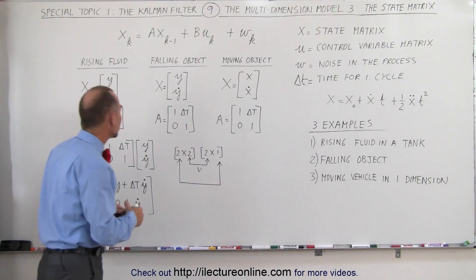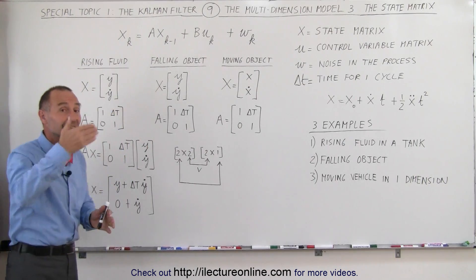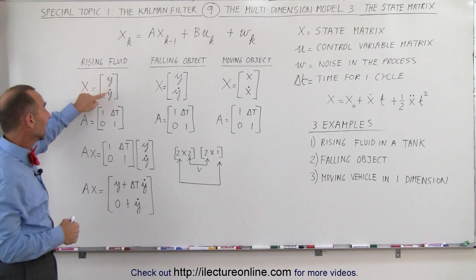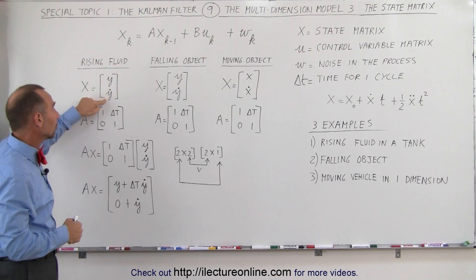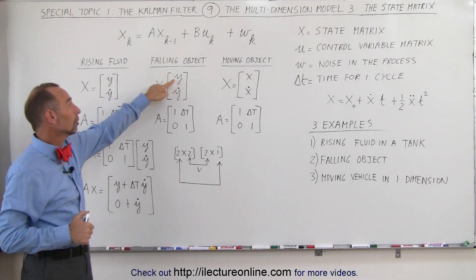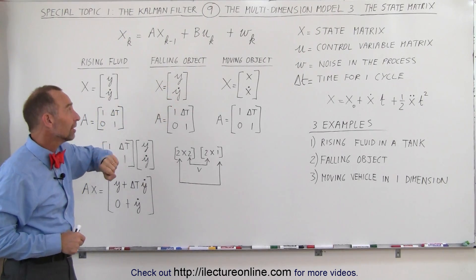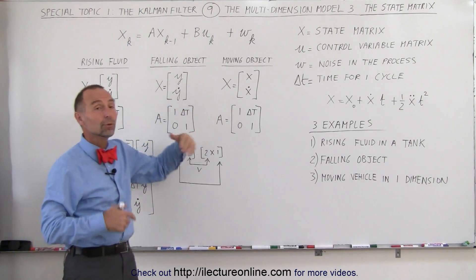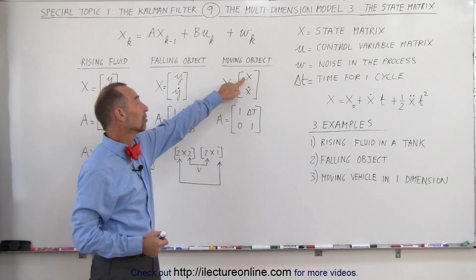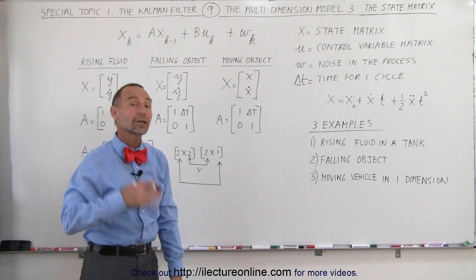Our state matrix for each of the three examples: in the case of a rising fluid, since that's in the y direction, we need to know the position and velocity in the y direction. For a falling object, again in the y direction, we need position and velocity in y. And for a moving object in the x direction, we want to know position and velocity in the x direction.